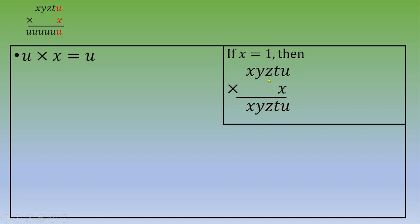We are going to start with the units. And we've got u times x is equal to u. So the first guess is x is equal to 1. But if x is equal to 1, then x, y, z, t, u times 1.